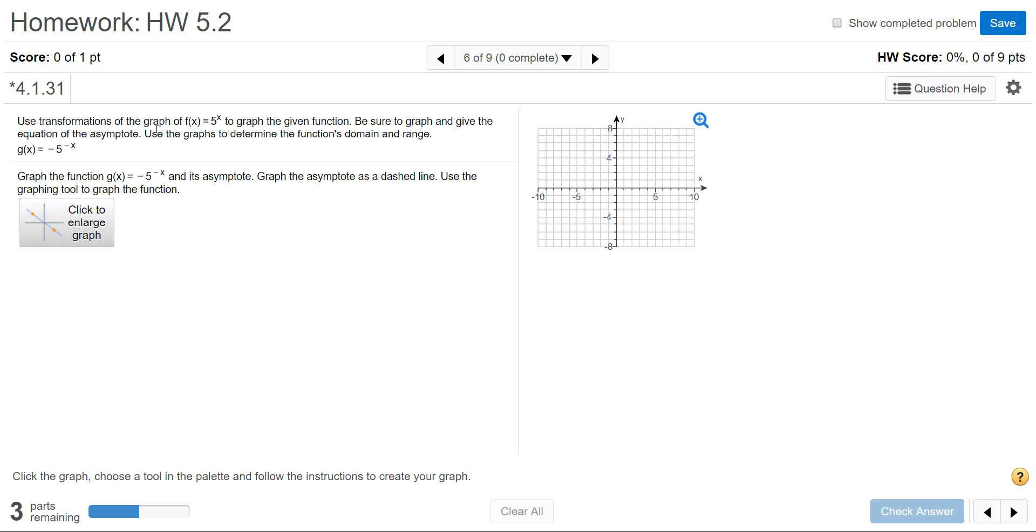We have the graph of f(x) equals base 5 to the x as our original graph and we want to graph the function g(x) which is negative 5 to the negative x.